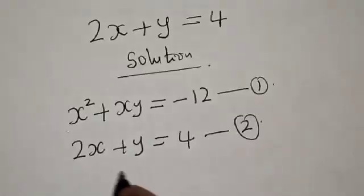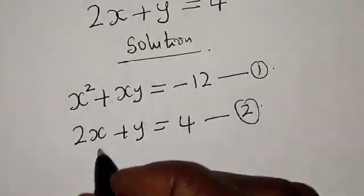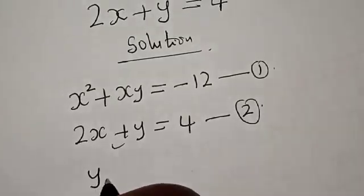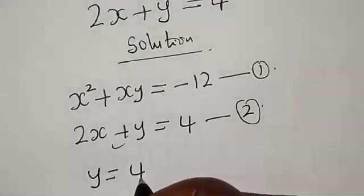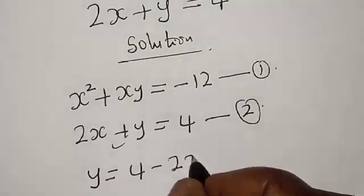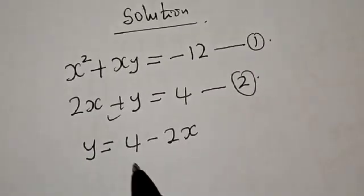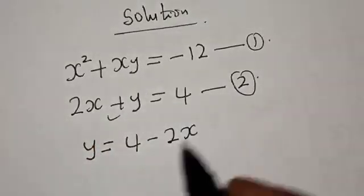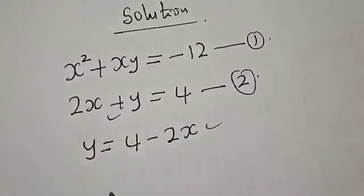Now from equation 2, let's make y the subject of the formula. From here, we have y is equal to 4 minus 2x. Now let's substitute for y in equation 1, and we know our y to be equal to 4 minus 2x.